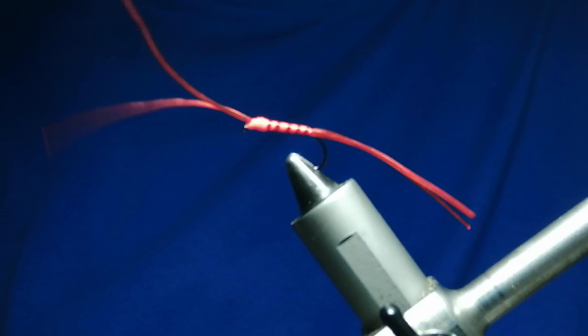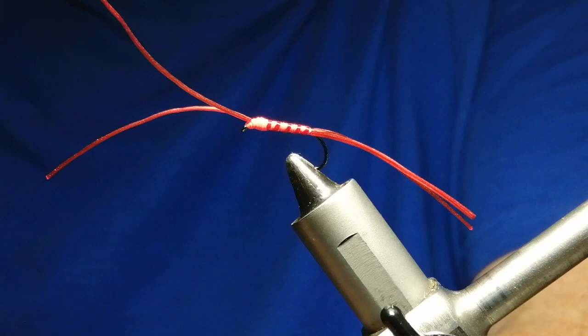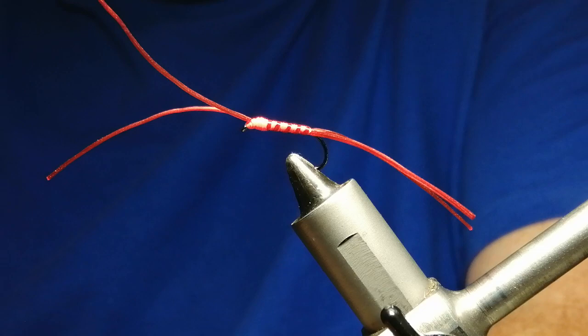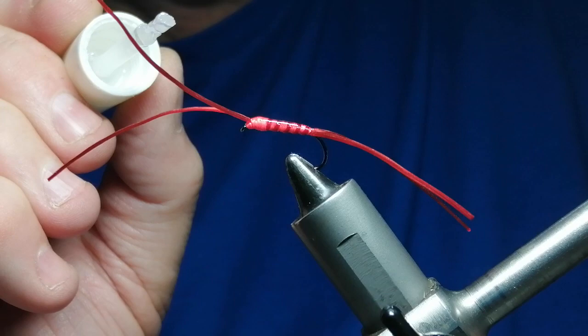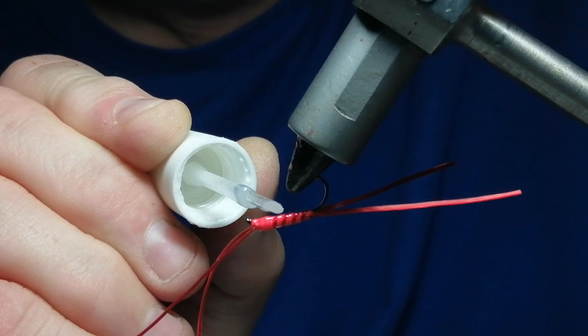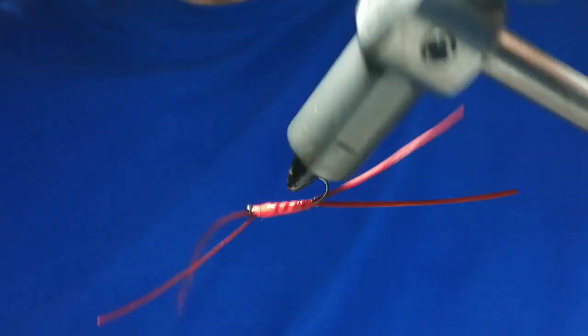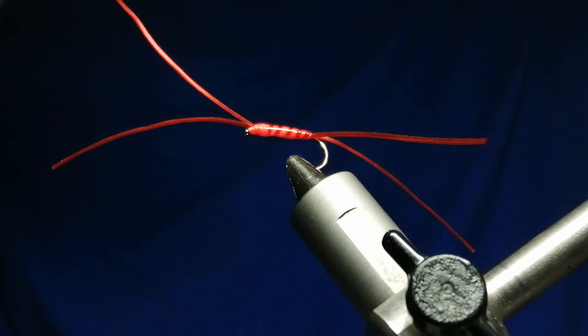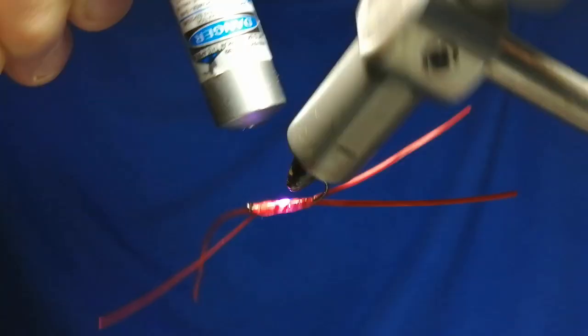And then we'll have it. All we need to do now is put some UV on to seal the body, so we'll do a coating of UV. Harden it off with a light.